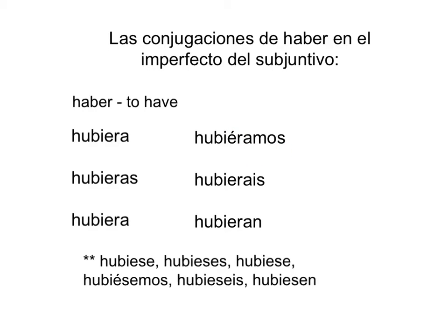Noten también que hay conjugaciones alternativas de haber en el perfecto del subjuntivo: hubiese, hubieses, hubiese, hubiésemos, hubieses y hubiesen. No se usan esas formas mucho, por eso no vamos a revisarlas mucho. Se usan a veces en España y la literatura, pero no mucho.